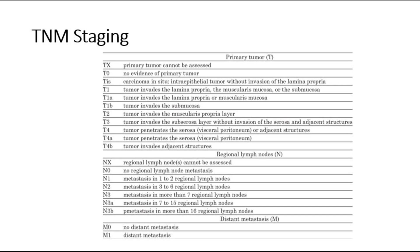T1 can be divided into T1A and T1B. T1A is if the tumour invades the lamina propria or muscularis mucosa. T1B is if it invades the submucosa. T2 invades the muscularis propria. T3 invades the subserosa. T4 invades through the subserosa and also adjacent structures.